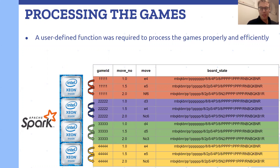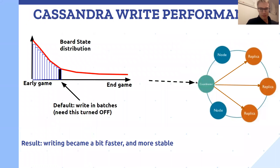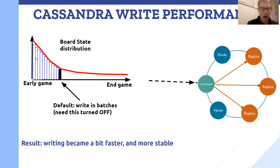I thought that step would have been the biggest bottleneck in my pipeline. However, by far the biggest bottleneck was the Cassandra write performance. This plot shows a distribution of the board state, which is our Cassandra partitioning column. It's heavily front-skewed because in the early game there are way more common board configurations with lots of overlap, but in the late game the board states are so unique there's way less overlap.